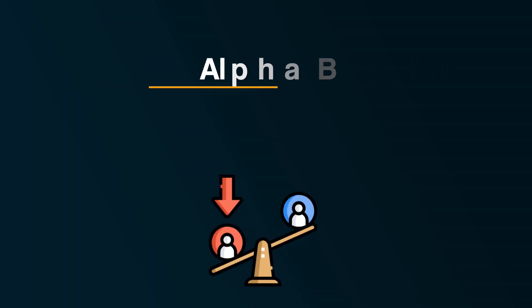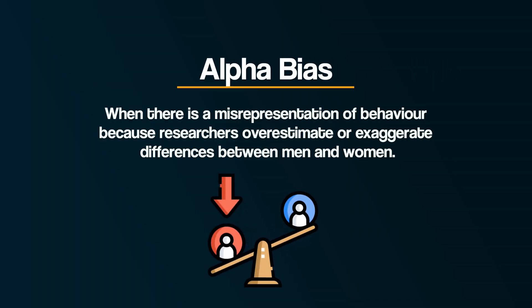Alpha bias. This is when there is a misrepresentation of behaviour because researchers exaggerate the differences between men and women.